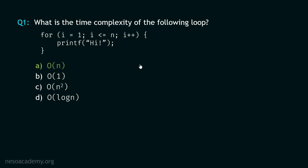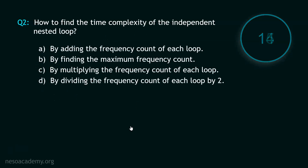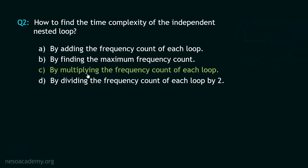Now here comes question number 2, and your time starts now. Stop. The correct option is option C. We calculate the time complexity of the independent nested loop by multiplying the frequency count of each loop.